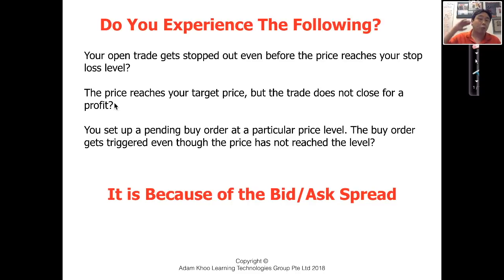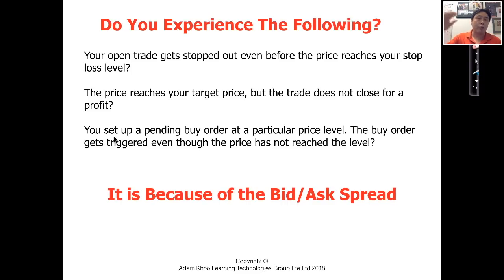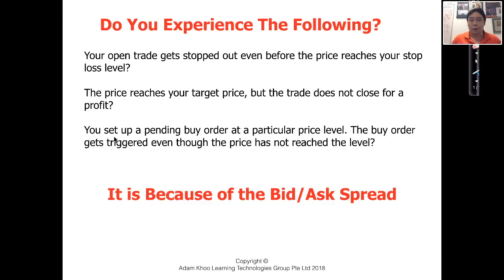Another example is that you set a profit target and the price seems to reach your profit target, but it doesn't trigger your order to exit with a profit. Another example would be you place a pending buy order, and before the price reaches that level, the broker buys in for you — so your order gets triggered even before the price reaches that intended entry price. If you experience these things, you're not alone. Many forex traders experience them.